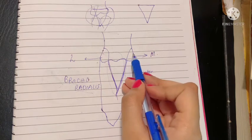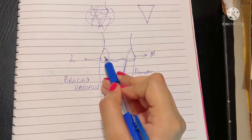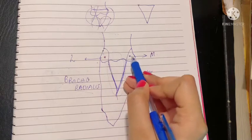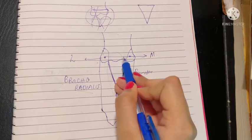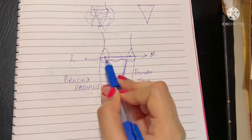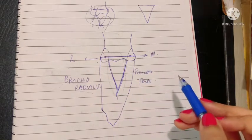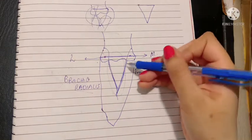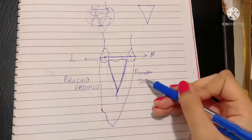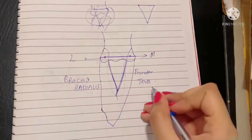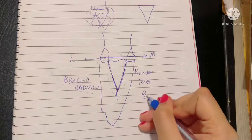The base of the cubital fossa is made by an imaginary line running between the two epicondyles, from lateral to medial epicondyle. The apex is the part where the pronator teres and brachioradialis cross.